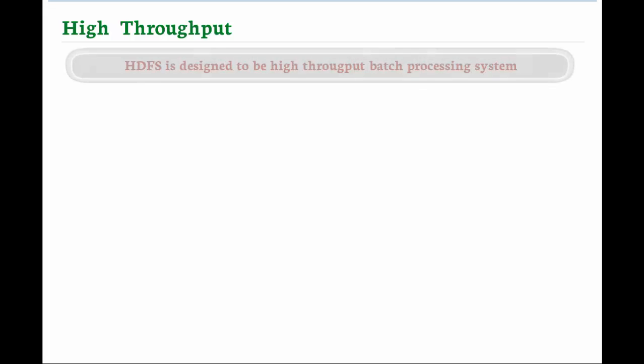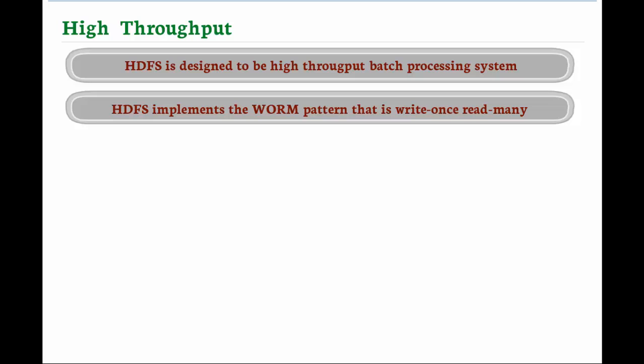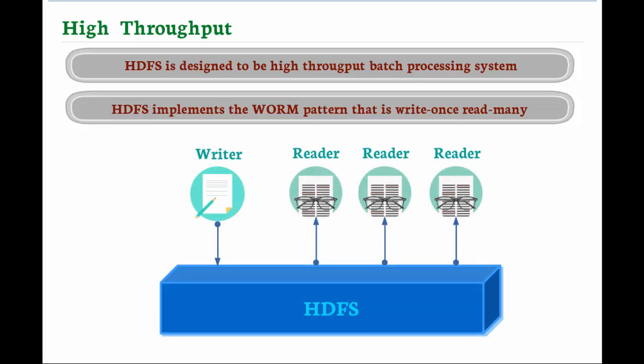HDFS is designed to be a high throughput batch processing system rather than providing low latency interactive usage. HDFS implements the WORM pattern, that is, write once, read many. The data is immutable, that is, once the data is written, it cannot be changed. Due to which the data is same across the network. Thus, it is able to process data in a given amount of time and hence achieving its goal of providing high throughput.